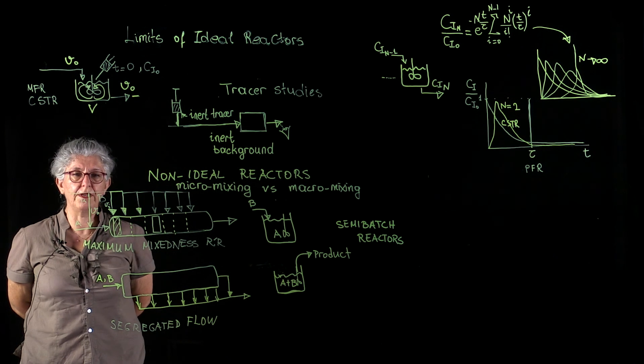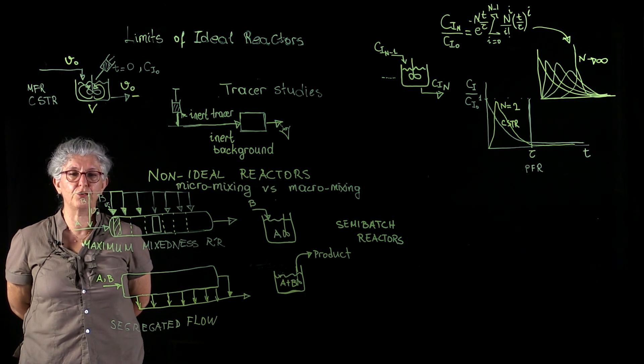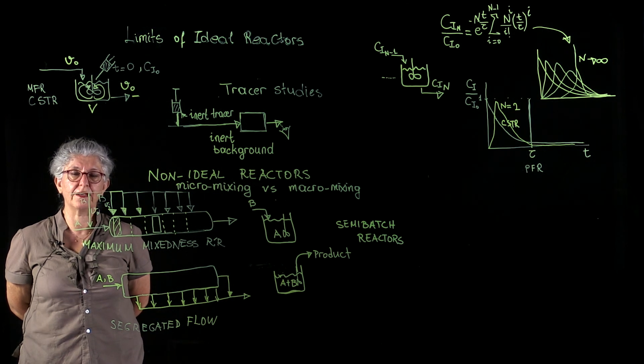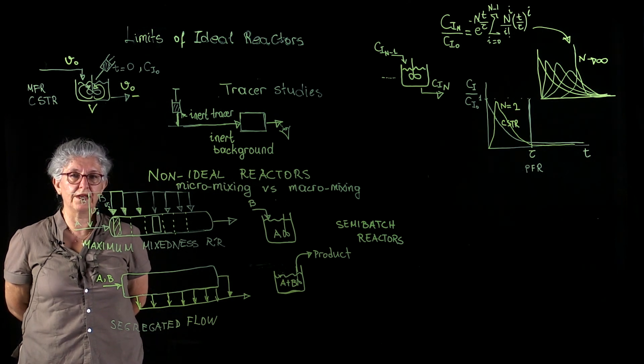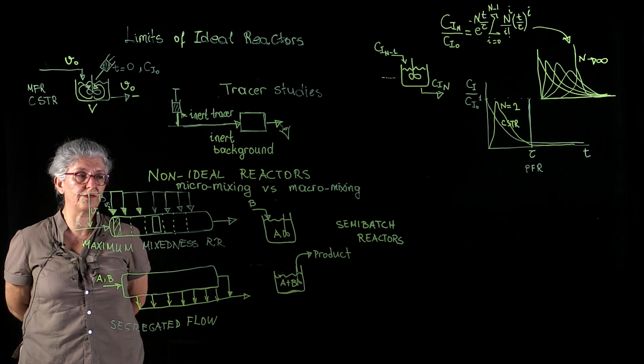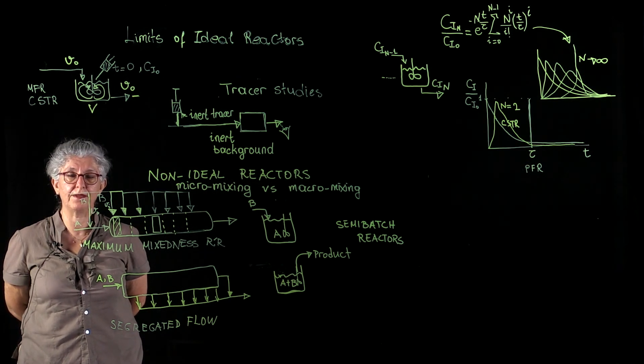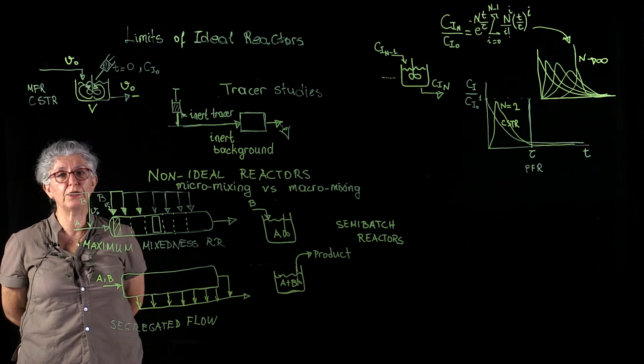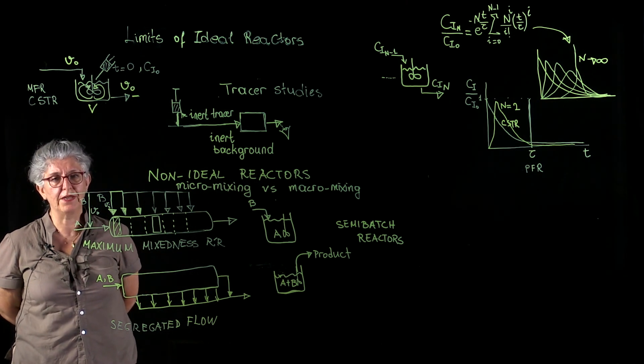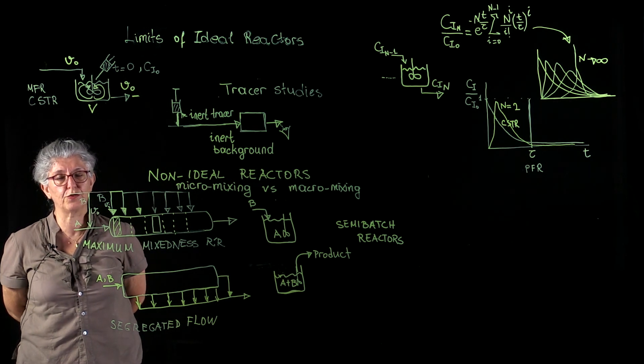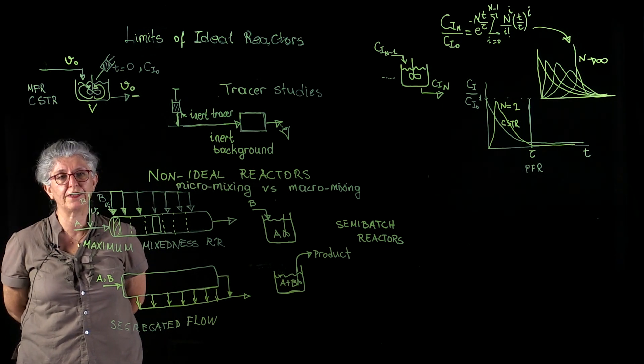So, in summary, we discussed the features of a maximum mixedness reactor, a segregated flow reactor, and two different types of semi-batch reactors. Mathematical analysis is going to be unique for each reaction, and for the particulars of the reactor volume versus the flow rates that we arrange.